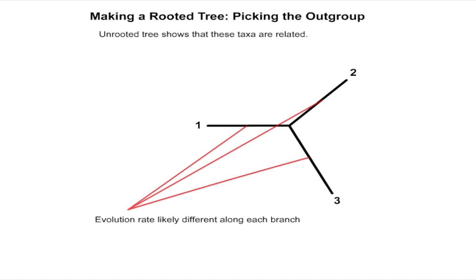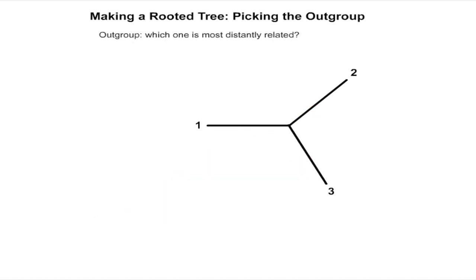We cannot simply choose a midpoint between the two most distantly related taxa, for this would assume that the rate of evolution is the same along all branches, which is often not the case. Therefore, the root for an unrooted tree is often determined through the use of an outgroup.